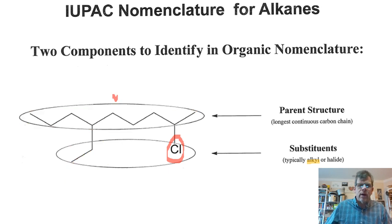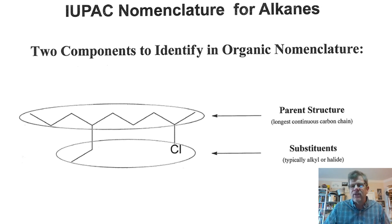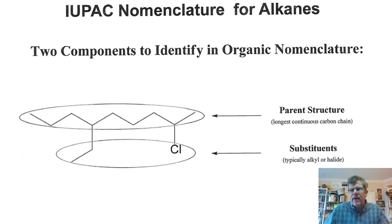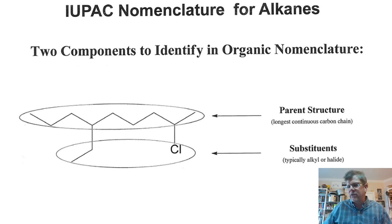For the remainder of this lecture, we'll introduce the parent structures we'll be working with — up to 10 carbons — as well as the types of substituents: alkyl or halide. We won't get into actual nomenclature until the next lecture; this lecture just lays the groundwork. These parent structures will form the base name not just for alkanes but for virtually all molecules containing functional groups that we'll be naming.